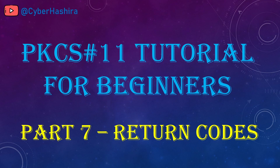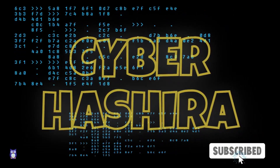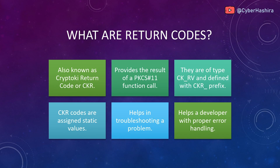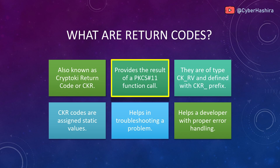Today I will talk about return codes and explain some of the common ones. These codes are called by different names such as return codes, return values, and CKR codes. However, according to PKCS11, they are referred to as Crypto Key Return codes or CKR. The purpose of a return code is to provide an outcome of a PKCS11 function.